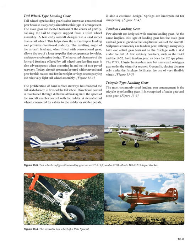Tandem landing gear: few aircraft are designed with tandem landing gear. As the name implies, this type has the main gear and tail gear aligned on the longitudinal axis of the aircraft. Sailplanes commonly use tandem gear, although many only have one actual gear forward on the fuselage with a skid under the tail. A few military bombers, such as the B-47 and B-52, have tandem gear, as does the U-2 spy plane. The VTOL Harrier has tandem gear but uses small outrigger gear under the wings for support.